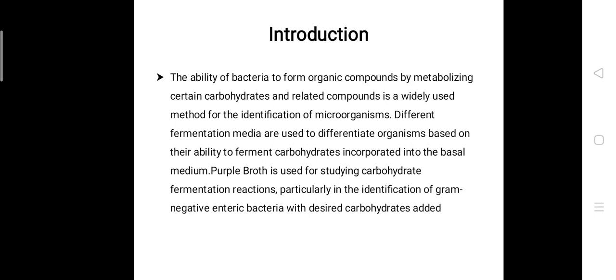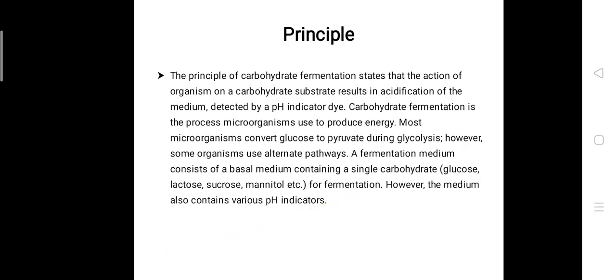The pH indicator detects the lowering of the pH of the medium due to acid production. Also, a small inverted tube called the Durham tube is placed inside the medium to test for the production of gas, that is hydrogen or carbon dioxide.